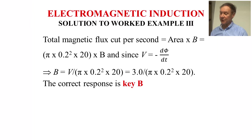The solution to worked example three. Total magnetic field cut per second is area times B, which is pi times 0.2 squared times 20 times B. And since V is minus d psi by dt, that rearranges to give B equals V over pi times 0.2 squared times 20, which is 3.0 over pi times 0.2 squared times 20. And the correct response is therefore key B.